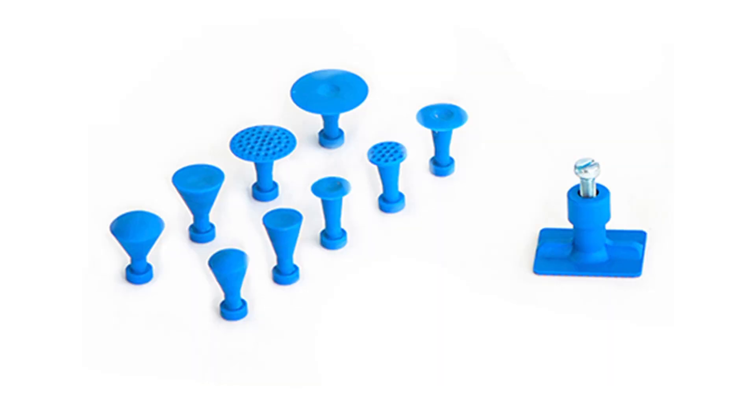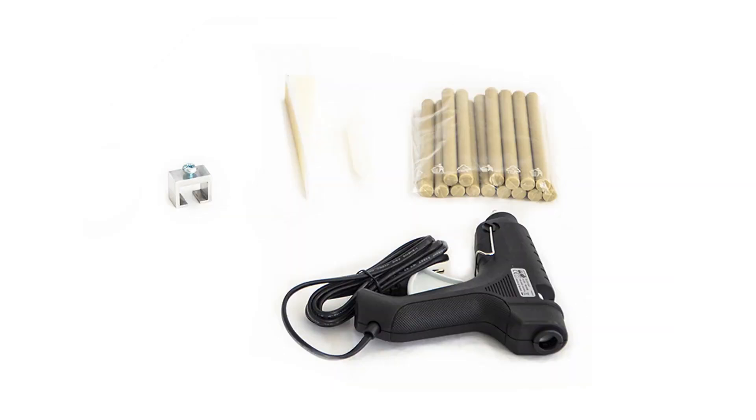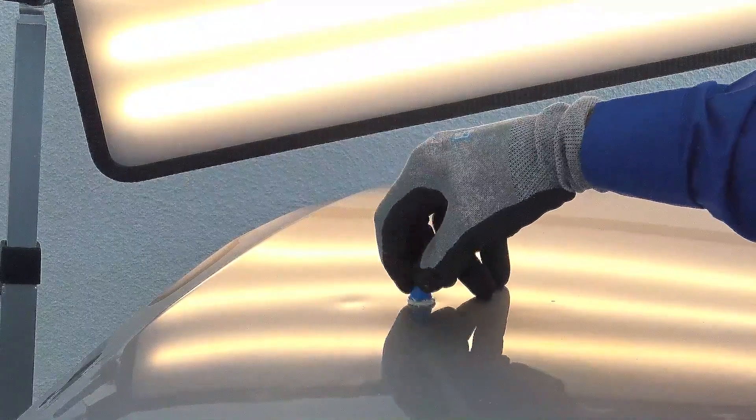Then we have 10 different types of pull knobs for different types of damages. Then we have the additional tools for the repair process. With the Speedline set you can repair small dents as shown here.